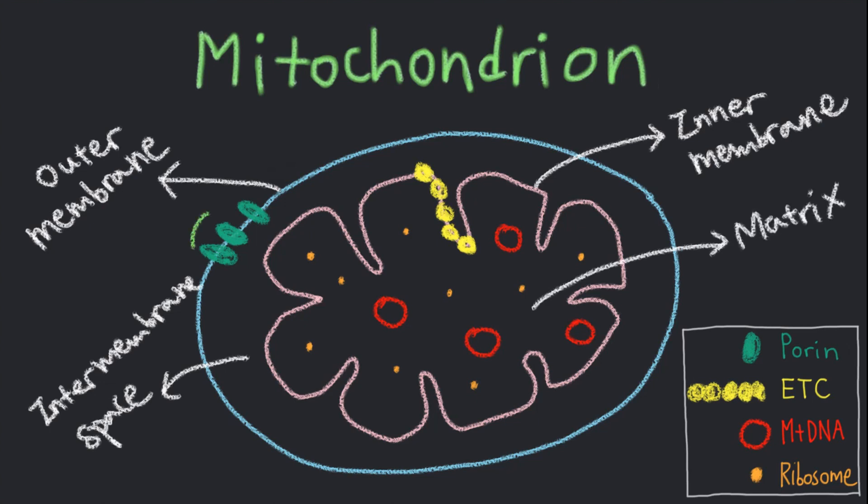The outer membrane contains proteins called porins, which allow ions and small molecules to pass.